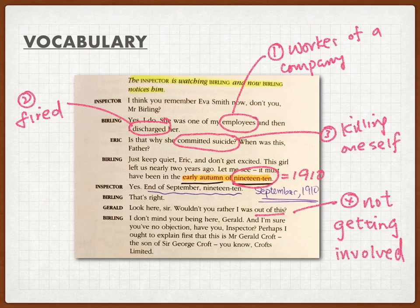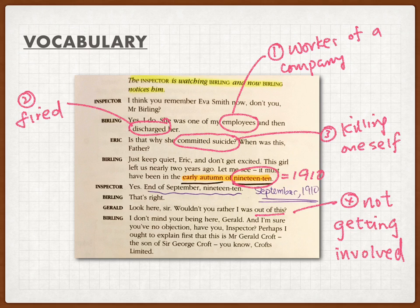In this part, the inspector has just arrived and he started questioning Mr. Berlin. The first vocabulary word is 'employees' — it means the workers, the staff of a company. Number two, 'discharged': Mr. Berlin said Eva was his employee a year ago and he discharged her. It means he fired her, asking her to leave the company.